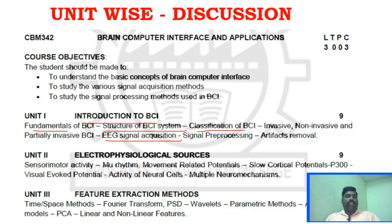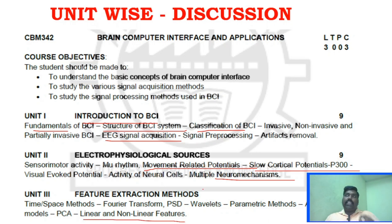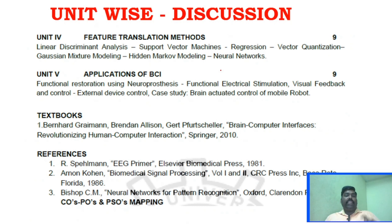Unit 2 key areas include: movement-related potentials, slow cortical potentials, neuromechanism, and multiple neuromechanisms. Unit 3 key areas include: ARMA models — both AR and MA components — and linear and nonlinear features. Also important in Unit 3 are: SVM, regression, vector quantization, and Hidden Markov Model.